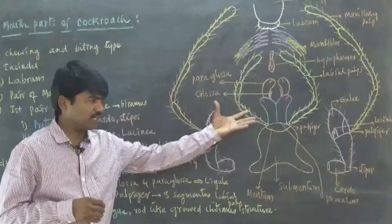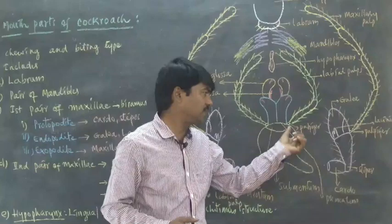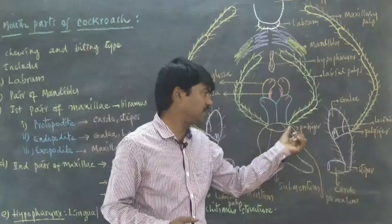It generally participates in the cleaning of antennae along with the four legs. The second pair of maxillae is composed of submentum, mentum, and prementum.